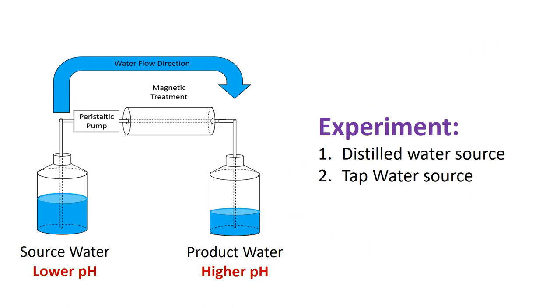How we perform the experiment is that we have soft water and this soft water has a pH value, which I consider as a lower pH value. The soft water will be pumped using a peristaltic pump and pumped through the magnetic treatment device. After this, water is treated in the magnetic field and will be collected as product water. We use two kinds of soft water for the experiments: one is distilled water, another is tap water.